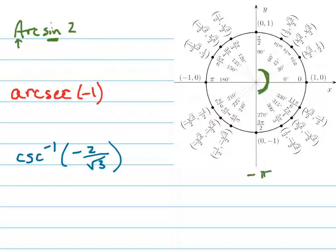From negative pi over 2 inclusive to positive pi over 2. So this has to be somewhere in between there.